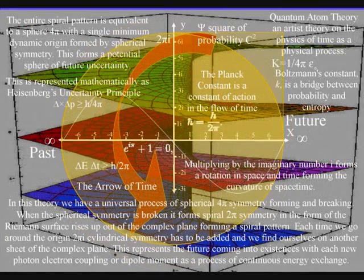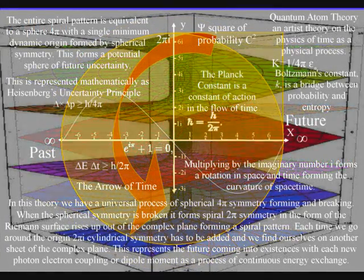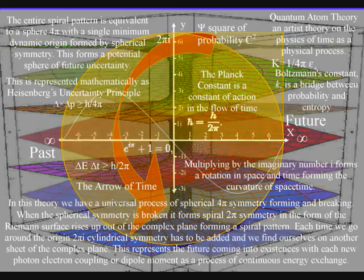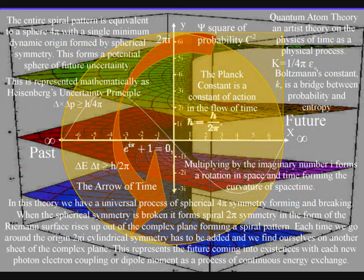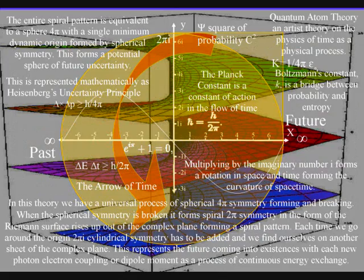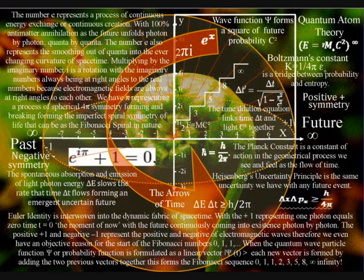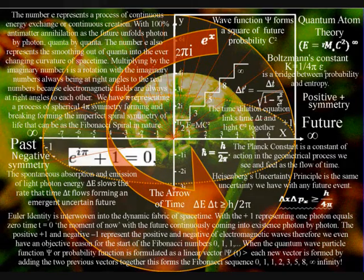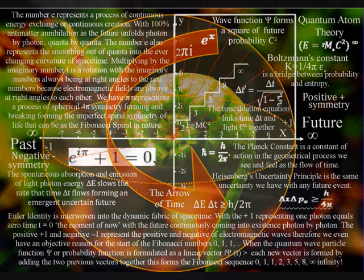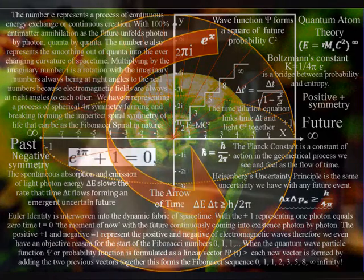When the spherical symmetry is broken, it forms spiral symmetry, forming the imperfect spiral symmetry that is visible in nature as a Fibonacci spiral. Because the process is universal, intelligent life will form its own broken symmetry out of this process, forming its own future relative to its energy and momentum of its own actions. In this theory, creation is truly in the hand and eye of the beholder.